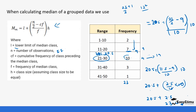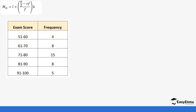Let's apply the same formula to another example. The total frequencies are 4 + 8 + 15 + 8 + 5, giving n = 40. Since 40 is even, we look at both the 40/2 = 20th value and the (40+1)/2 = 20.5th value to find the median position.